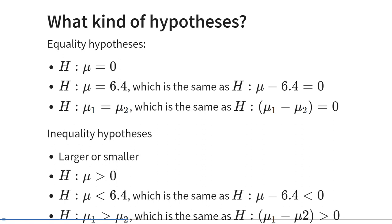We can also test inequality hypotheses, also known as one-sided hypotheses. These specify that something is larger or smaller than something else. For example, we could hypothesize that a mean is larger than zero, or that a mean is smaller than 6.4 — which is the same as saying the mean minus 6.4 is smaller than zero. Null hypotheses stand in relation to an alternative hypothesis. The null hypothesis's only purpose is to be rejected, while the alternative hypothesis often reflects the researcher's true beliefs.